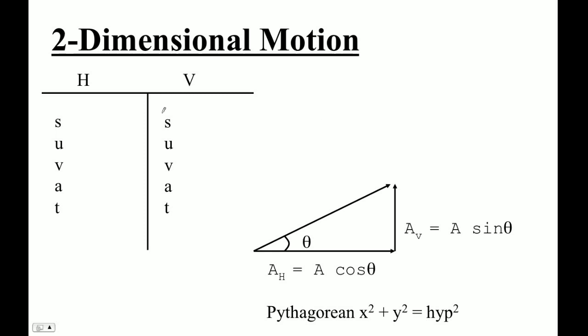So let's look at two-dimensional motion, like projectile motion problems. Remember, the deal with this is that it's just two SUVATs, a horizontal and a vertical one. And then we're also going to use vectors. So we're going to use SOHCAHTOA. We're going to use that x squared plus y squared is the hypotenuse squared. Even that tangent of theta is opposite over adjacent and all this stuff.